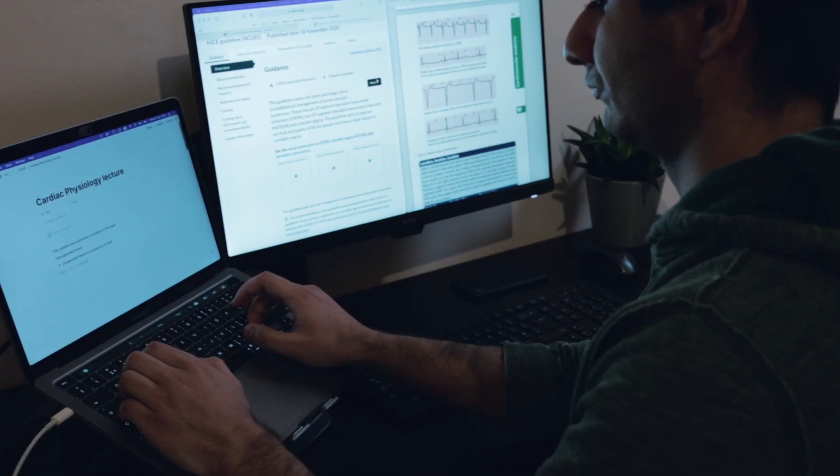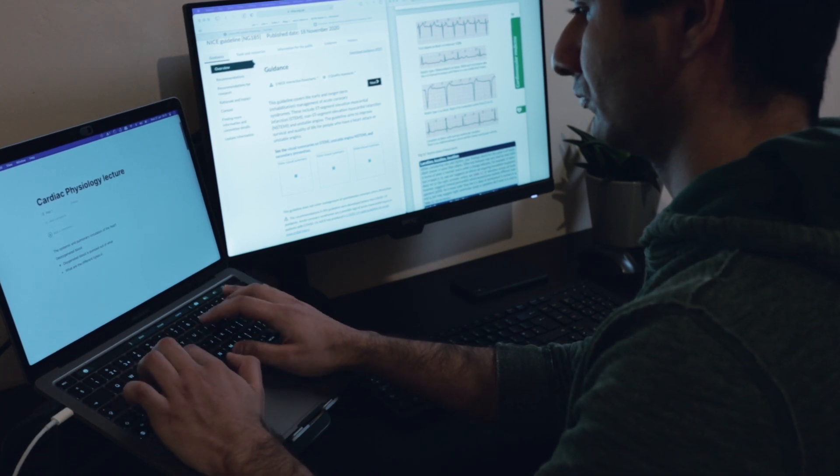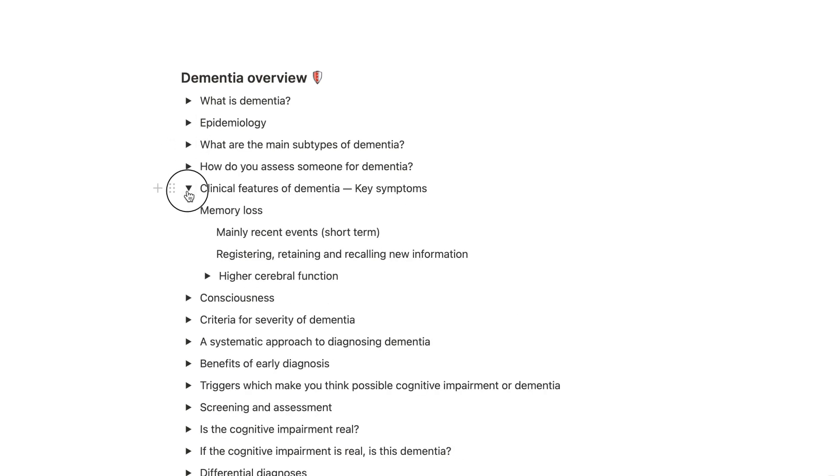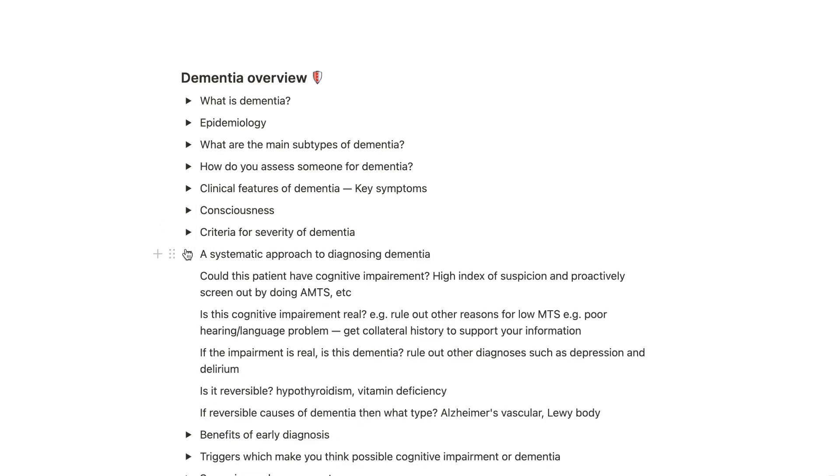I use my existing lecture notes alongside other resources — my Oxford Handbook, PasTest, or Google searches — to make sure I understand everything. As I go through, I update my notes and create questions with toggles, putting the answers inside so that when I review later I can think about the answer before revealing it, promoting active recall. When revising for exams I'll just run through the list of toggles, check my answers, and revisit anything I couldn't remember.